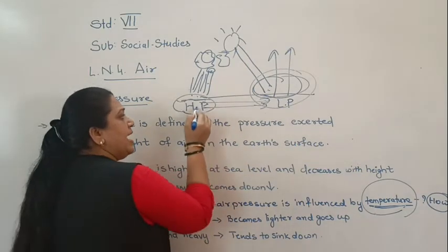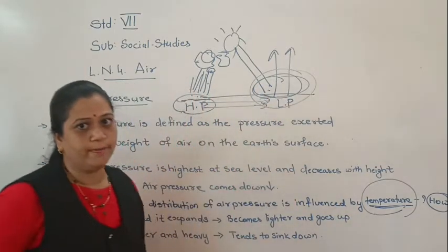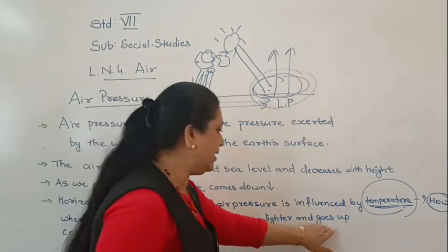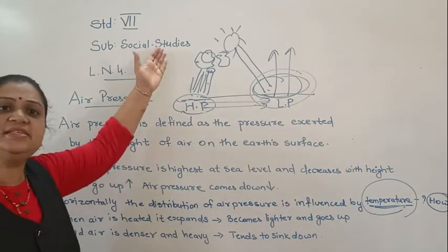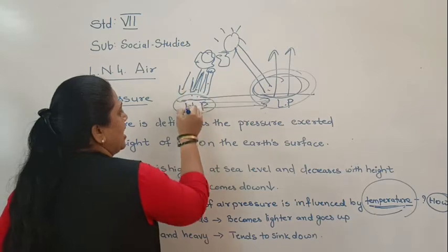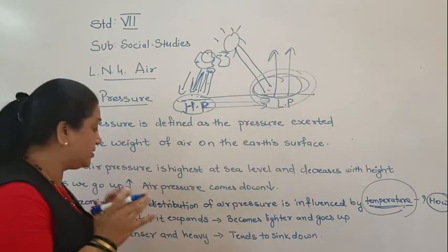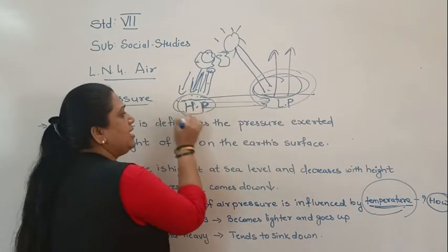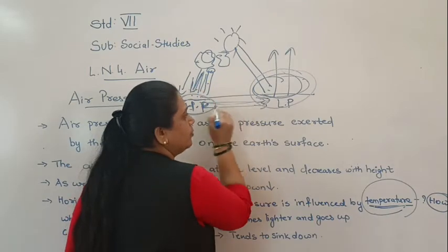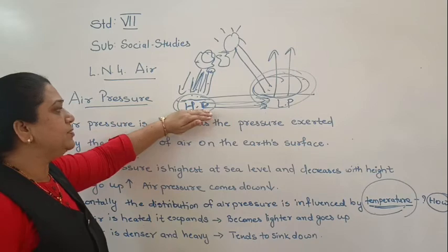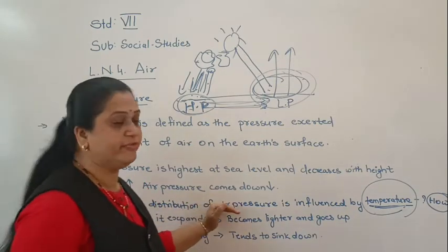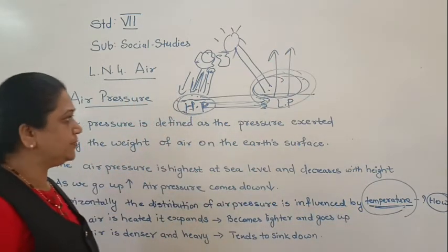Air moves from high pressure to low pressure. When air is heated it expands, becomes lighter, and goes up. Cold air is denser and heavy, so it tends to sink, creating high pressure. When warm air rises, a hollow space is created and the cold dense air moves in to fill it. So winds blow from high pressure to low pressure.